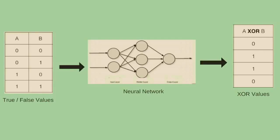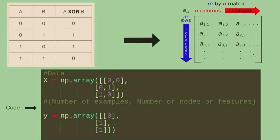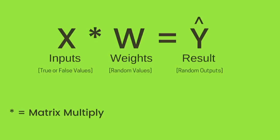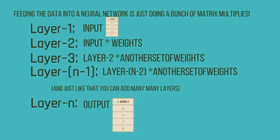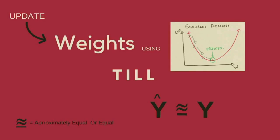I'm going to show you a neural network that will be able to map true or false values to its XOR values. The first thing you do is convert the dataset into two matrices — a matrix is just a group of numbers in the shape of number-of-examples by number-of-nodes or features. In this case we have two features. Then you matrix-multiply that matrix of true/false values with another matrix filled with random values. The numbers in this matrix are called weights, giving a result matrix with shape three-by-one. You then optimize these weights using an algorithm called gradient descent until you get the correct result.